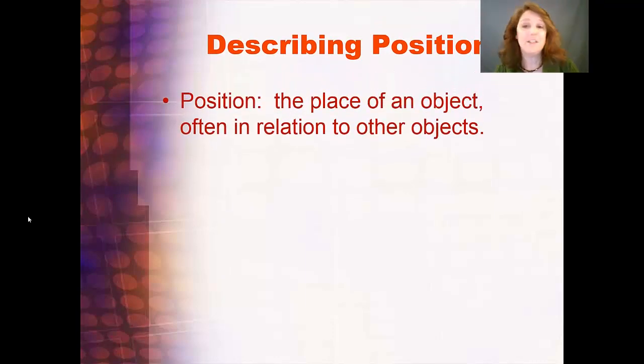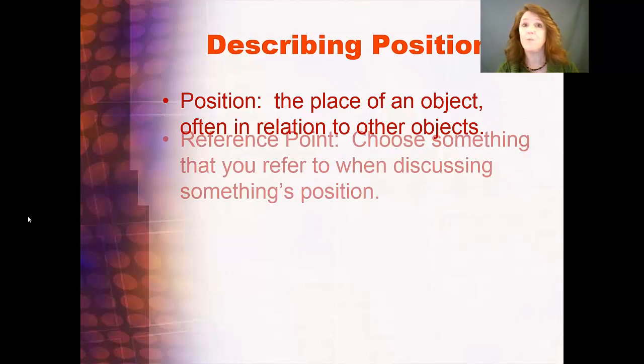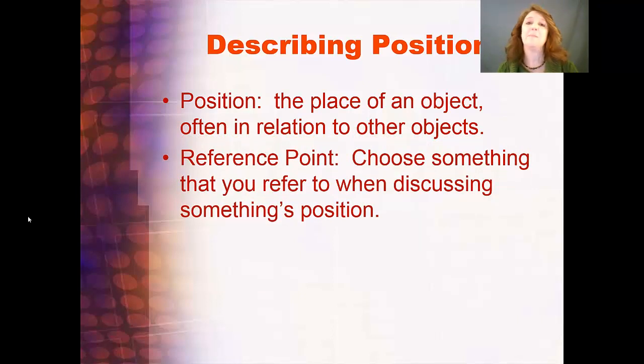Your position is the place of an object, often in relation to other objects. Because we're talking about motion, we have to talk about something that's moving away from or towards something else. And that something else is what we call a reference point. You choose something that you refer to when you're discussing something's position. That could be the stop sign on the corner and how fast you're going in relation to that stop sign or in relation to that moving car.